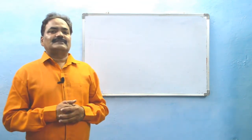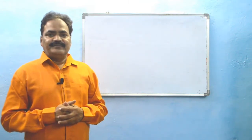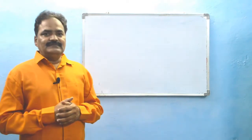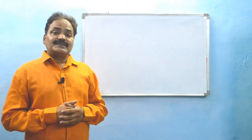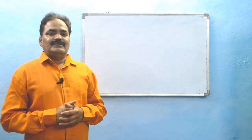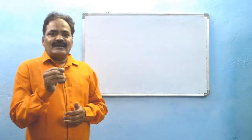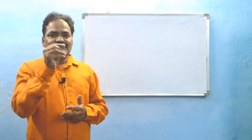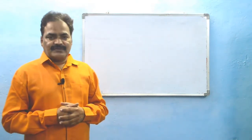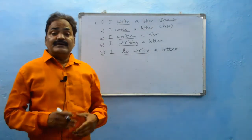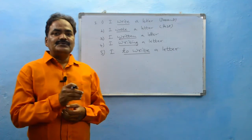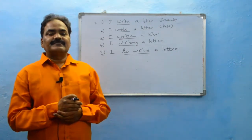When we observe the present form, for example we take one principal verb: write. Write is the present form verb. Wrote is past form, written is past participle, writing is present participle, and to write is the infinitive form. So we understand the infinitive is formed just by adding 'to' before the present form verb — write, to write.